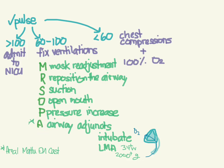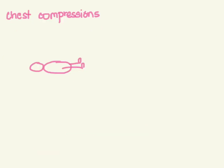If we're between 60 and 100, we use MR SOPA to better ventilate the baby. If the pulse is less than 60, it's time for chest compressions and 100% O2. Remember: in pediatric resuscitations, ventilations are more important, so make sure you're giving good ventilations before jumping to chest compressions.